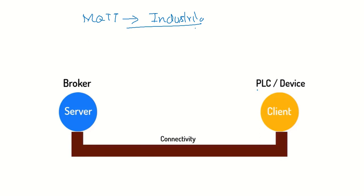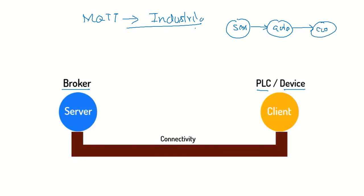In MQTT, the client can be a PLC or device, and the server is the broker. In Industrial IoT, we have a sensor that sends data through a gateway device to the cloud. So the sensor communicates with the cloud via the gateway. The PLC is the client device, the data is an electrical signal, and the server is the broker and cloud.